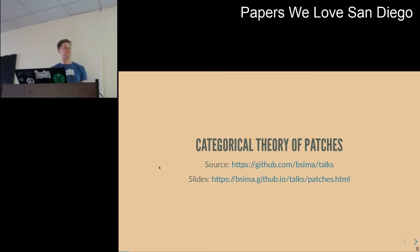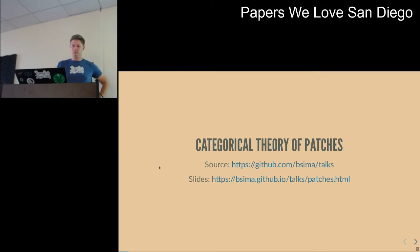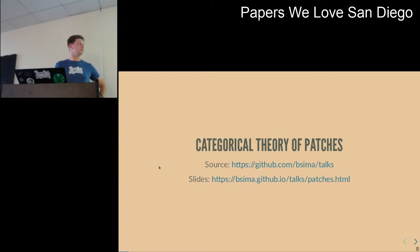Welcome everyone to the San Diego chapter of Papers We Love. Our speaker this evening is Ben Sima, a self-described Haskell and Clojure hacker. He's going to be presenting 'A Categorical Theory of Patches' by Samuel Nimrum and Chinesio DiGiusto. Let's have a big round of applause for Ben Sima.